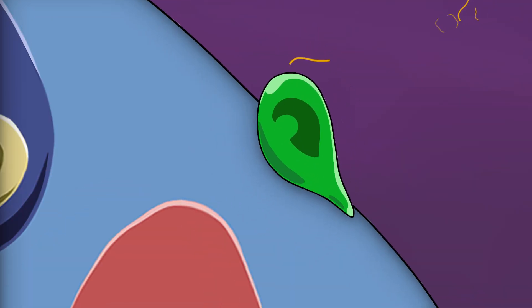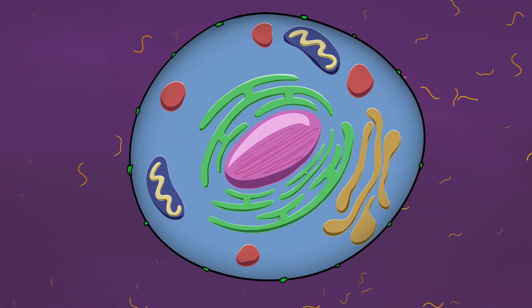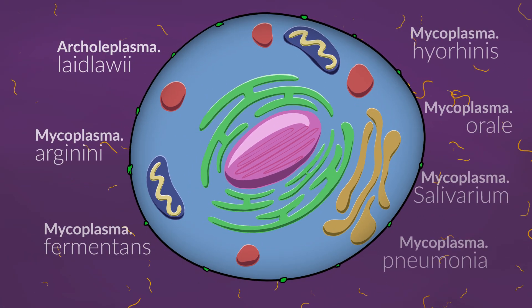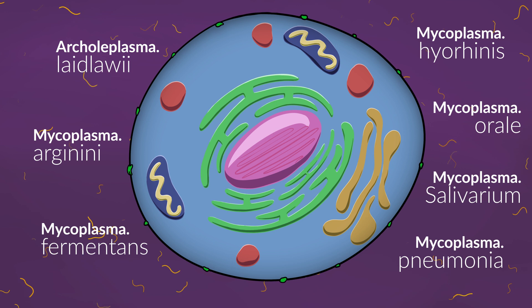Mycoplasma is a genus of bacteria that lacks cell wall around their cell membrane. 95% of mycoplasma contamination comes from the following seven species.